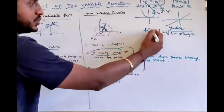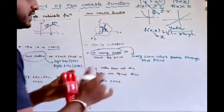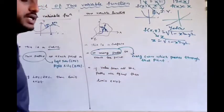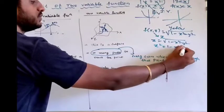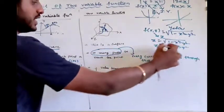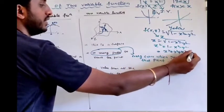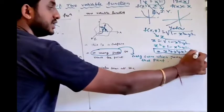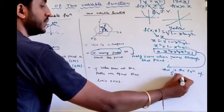This is the equation of a sphere. The sphere is a surface, and it is an example of a two-variable function. We need to understand such functions of two variables.